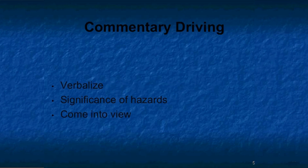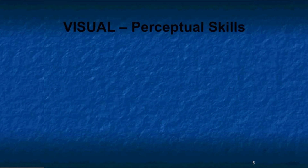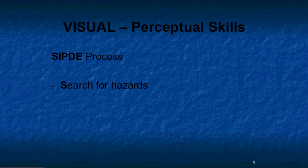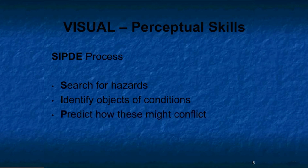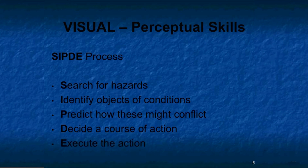Continuing in our discussion on how to develop driving skills, let's talk about commentary driving as a training technique. This method should be utilized in order to train bus drivers to verbalize the driving significance of critical objects or conditions as they come into view. We use the SIPDE process: S stands for Search for hazards; I is Identify the critical objects or conditions of the traffic environment; P is to Predict how these objects or conditions might produce conflict with your bus; then Decide a course of action that offers the least risk of collision; and finally Execute the action you have decided upon in time to be effective.